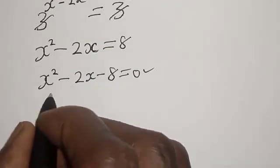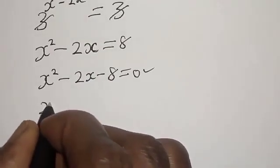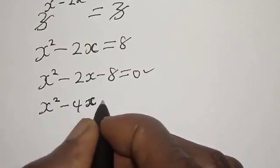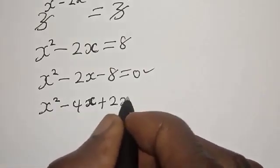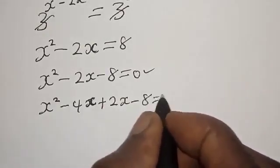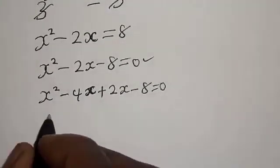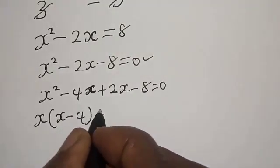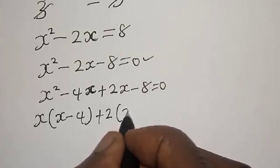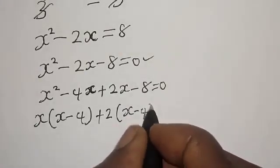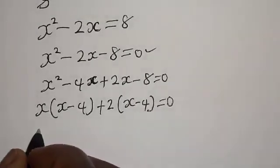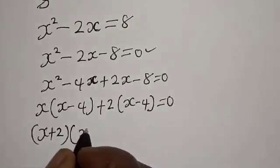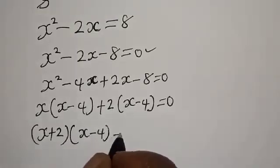We solve this quadratic by factorization. We split the middle term: s squared minus 4s plus 2s minus 8 equals 0, which factors as s(s minus 4) plus 2(s minus 4) equals 0, giving us (s plus 2)(s minus 4) equals 0.